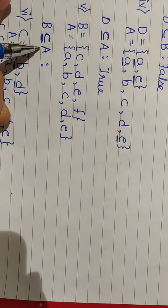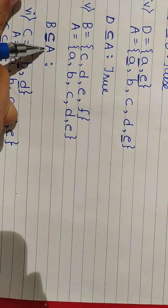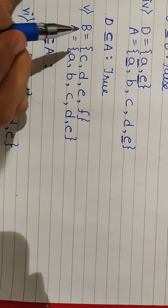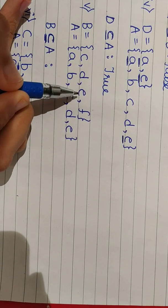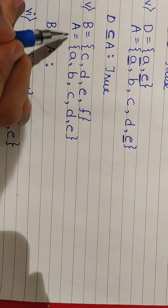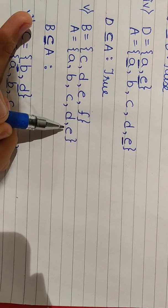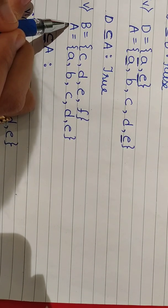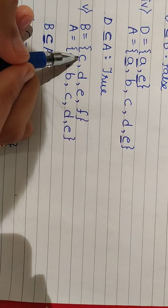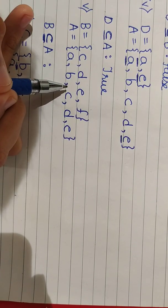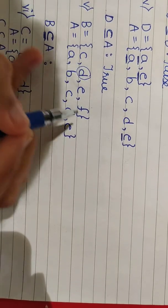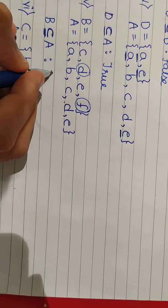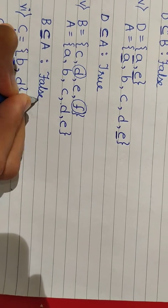Is B subset of A? To prove B is a subset of A, all the elements of set B should be present in set A. B = {C, D, E, F} and A = {A, B, C, D, E}. Here you can see all the elements of set B are not a part of set A. C and E are there in set A, but D and F are not present in set A. Therefore, this statement is also false.